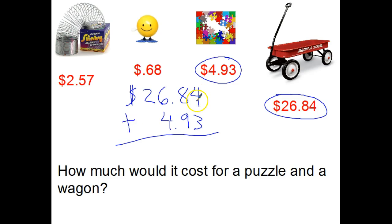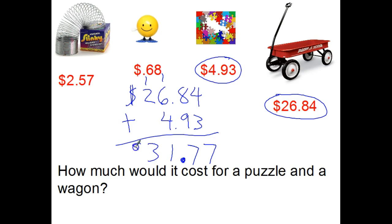So we're going to add: $4 plus $3 is $7. $8 plus $9 is $17, so I'm carrying my $1 up here. $1 and $6 is $7, plus $4 more is $11 — carry my $1 again. Plus $2 is $3. I line up my decimal point like buttons on the shirt. And when I check my answer, is $31 more than both of my items? Yes, so that makes sense.